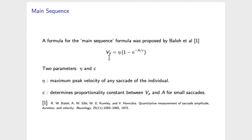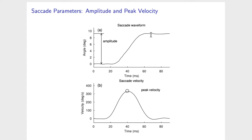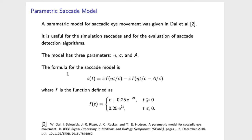Here is the peak velocity as a function of the amplitude A. The formula has two parameters, eta and c. This is an exponential. By varying the parameters eta and c, we can vary the saturation that this curve reaches, and we can vary how fast the initial slope of the curve is. So we would like to have a model for the saccade waveform that has as parameters the amplitude of the saccade, as well as the main sequence parameters eta and c.